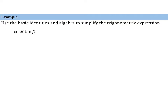Let's look at simplifying an expression written with trigonometric functions. Here we have cosine of beta times tangent of beta, and we want to simplify this expression. We know that we can rewrite tangent of beta as sine of beta over cosine of beta. Cosine of beta and cosine of beta cancel, and this leaves us with sine of beta.